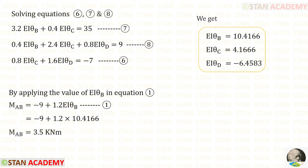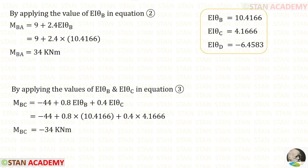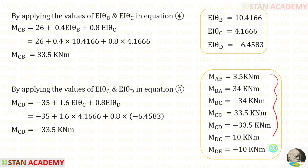Now we have three equations: the 7th, 8th, and 6th. Using the calculator, we can solve these three equations. After solving, we will get EIθB, EIθC, and EIθD. If you do not know how to solve three equations using the calculator, see the description below — there is a link. Applying EIθB in equation 1 gives MAB, in equation 2 gives MBA, applying EIθB and EIθC in equation 3 gives MBC, in equation 4 gives MCB, and applying EIθC and EIθD in equation 5 gives MCD. We have now calculated all of the moments.